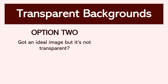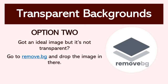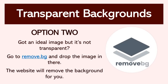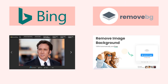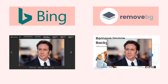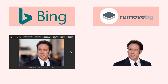Option two: got an ideal image but it's not transparent? Don't worry. Go to remove.bg and then drop the image in there. The website will actually remove the background for you. For example, we've gone to Bing and got this beautiful picture of Nicolas Cage. We take that image, send it over to remove.bg, and it creates that transparent background. Now we can upload the image into our PowerPoint slide.